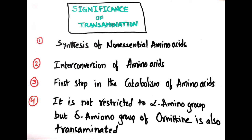Transamination does not only involve the alpha amino group. There are amino groups present at different positions. For example, the delta amino group is also removed in the case of ornithine, and that amino group can be transaminated.